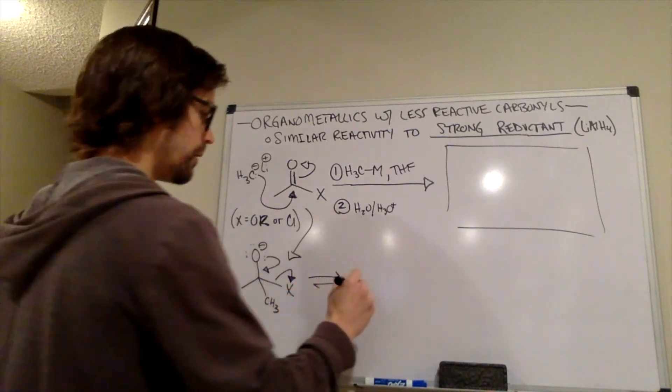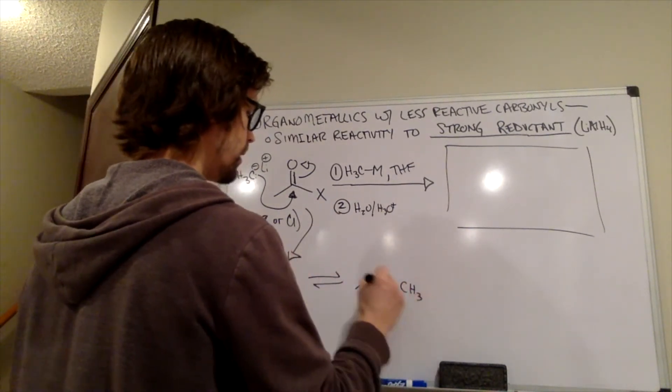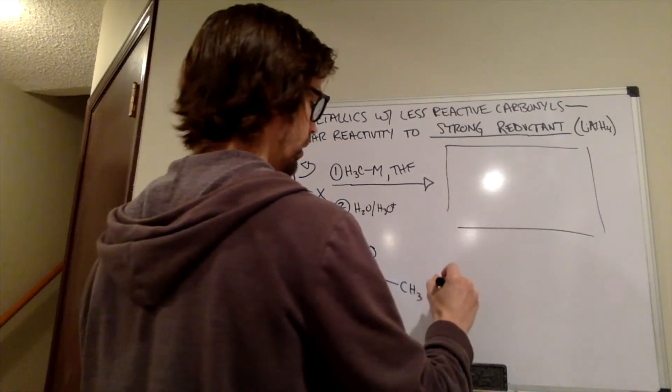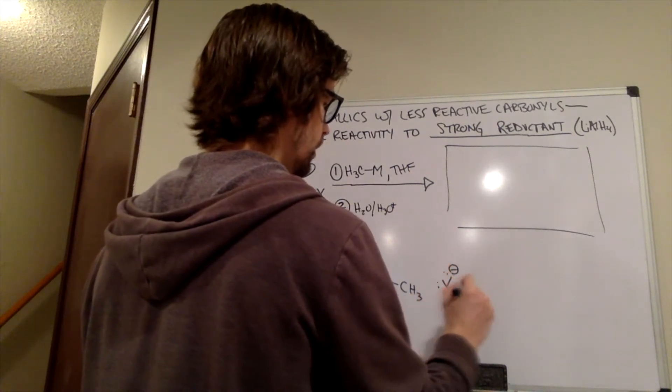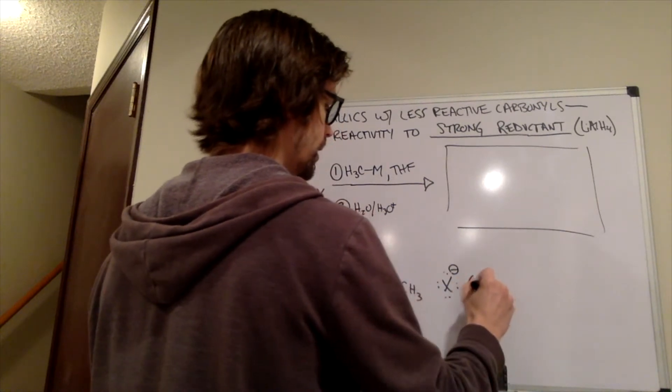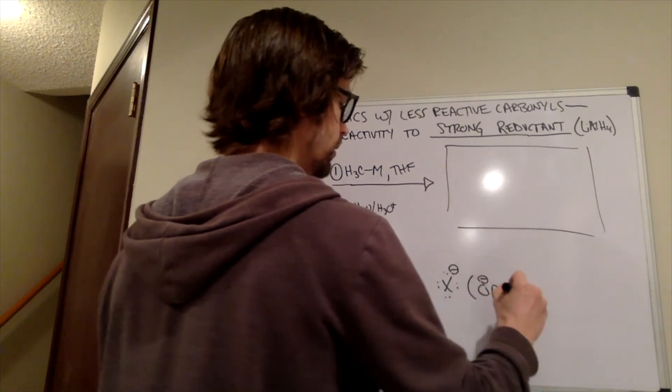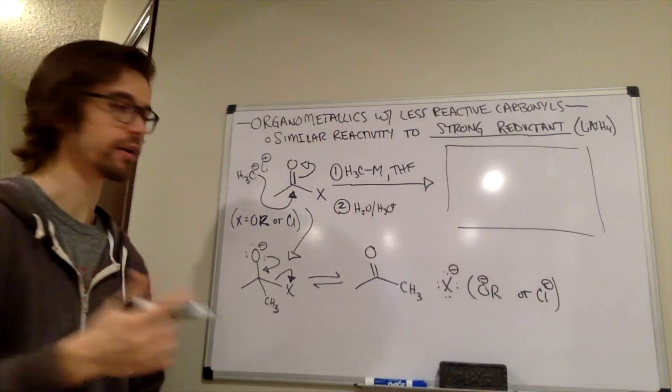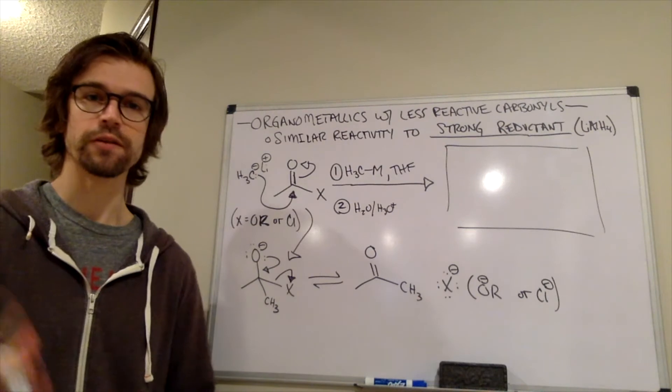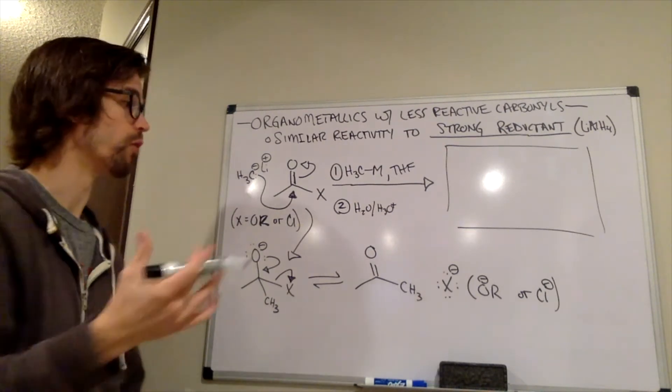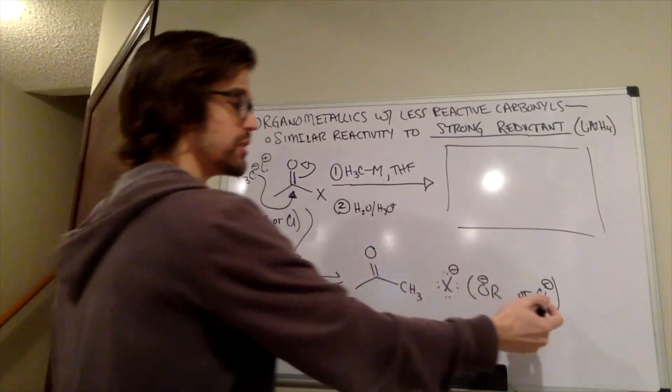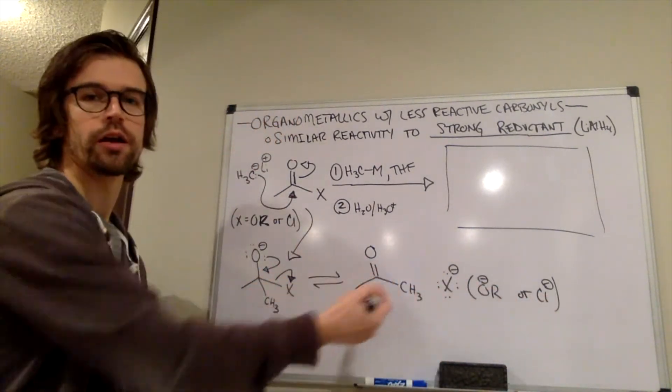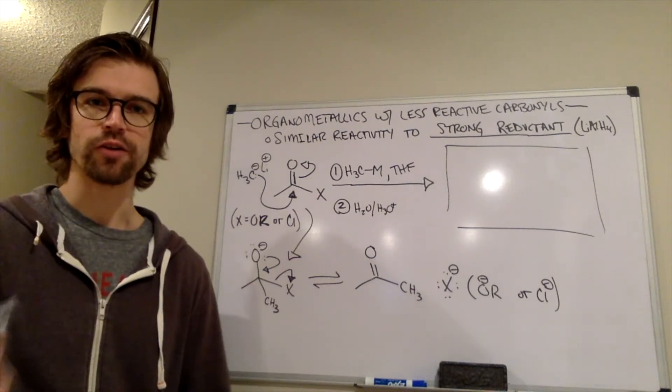And that would provide a ketone. And then we would also have our X-. And in this case, our X- could be an OR-, or a Cl- if it's an acid chloride. So acid chlorides are another type of carbonyl derivative. It is more reactive than esters because chlorine is such a good leaving group. But essentially this equilibrium is still going on. But if there is some of that organometallic around, it's going to want to react with the ketone because that's a really strong electrophile.